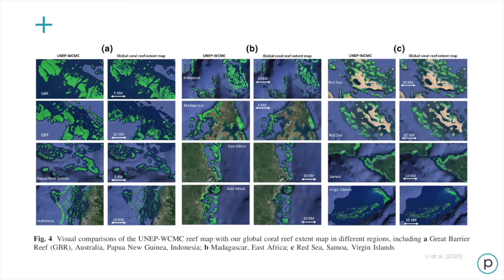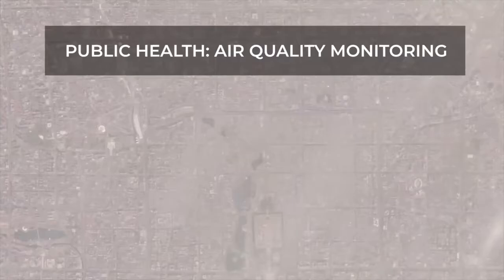This is an example of reef maps taken on the ground combined with lower-resolution satellite imagery alongside the reef extent maps created from the machine learning CNN algorithms. You can compare the panels and see a much more fine-scale idea of exactly where the reefs are and what their structure looks like from this methodology.